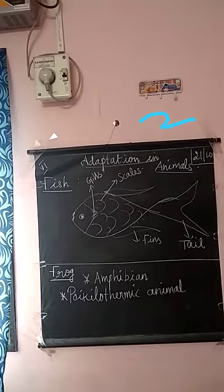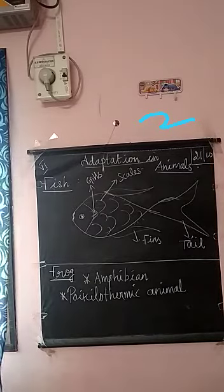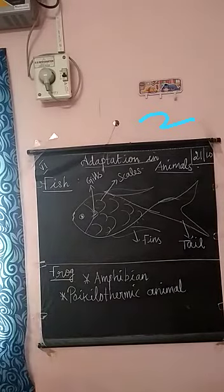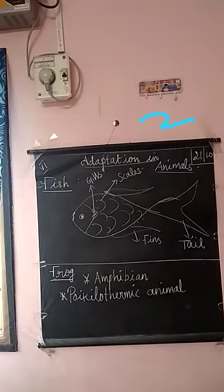The body of a frog is divided into a head and trunk, with two pairs of limbs — so there are four limbs in total.